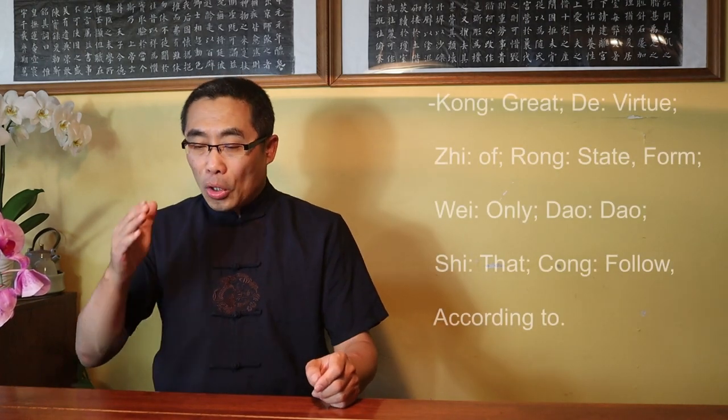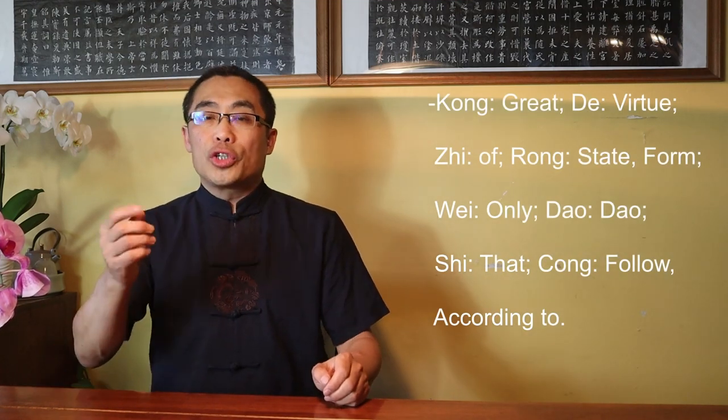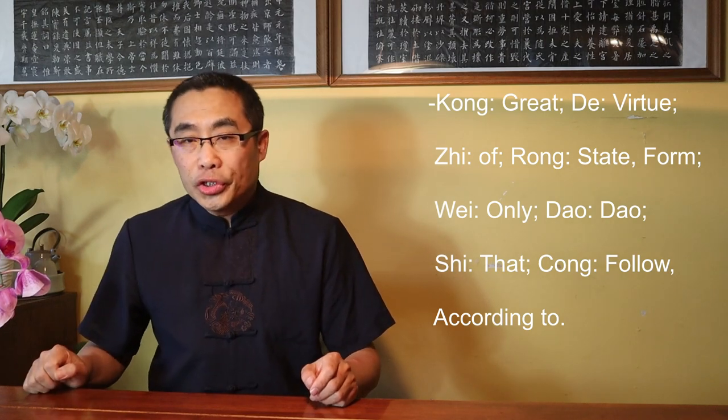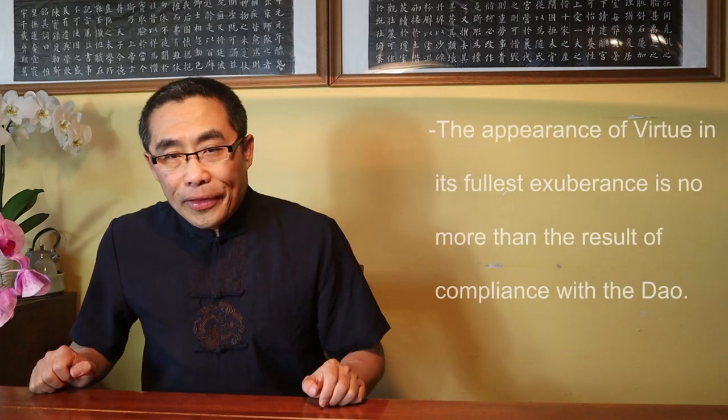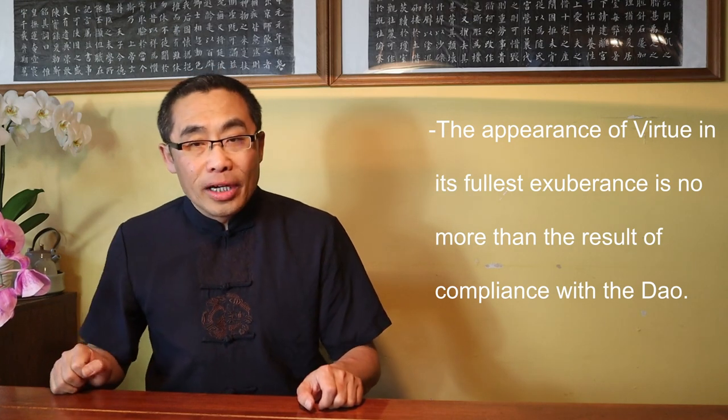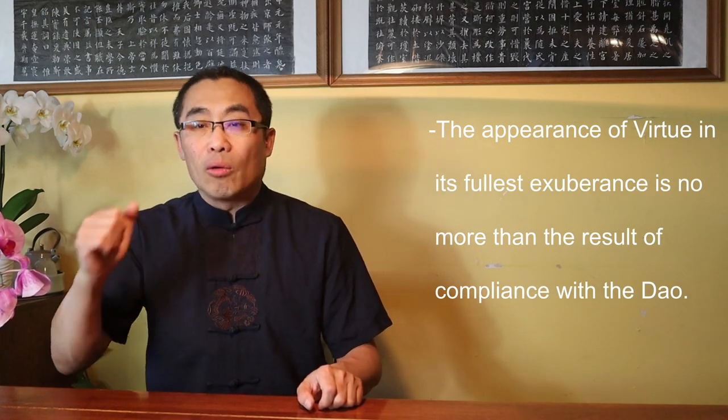The first two sentences, Kung De Zhirong, Wei Dao Shi Cong, contains the word De or Virtue, one of the two key words of the title of the book Dao De Jing. First, let's translate these two sentences word by word. Kung means Great, De means Virtue, Zhe means Of, Rong means State or Form, Wei means Only, Dao means Dao, Shi means That, Cong means Follow or According to.